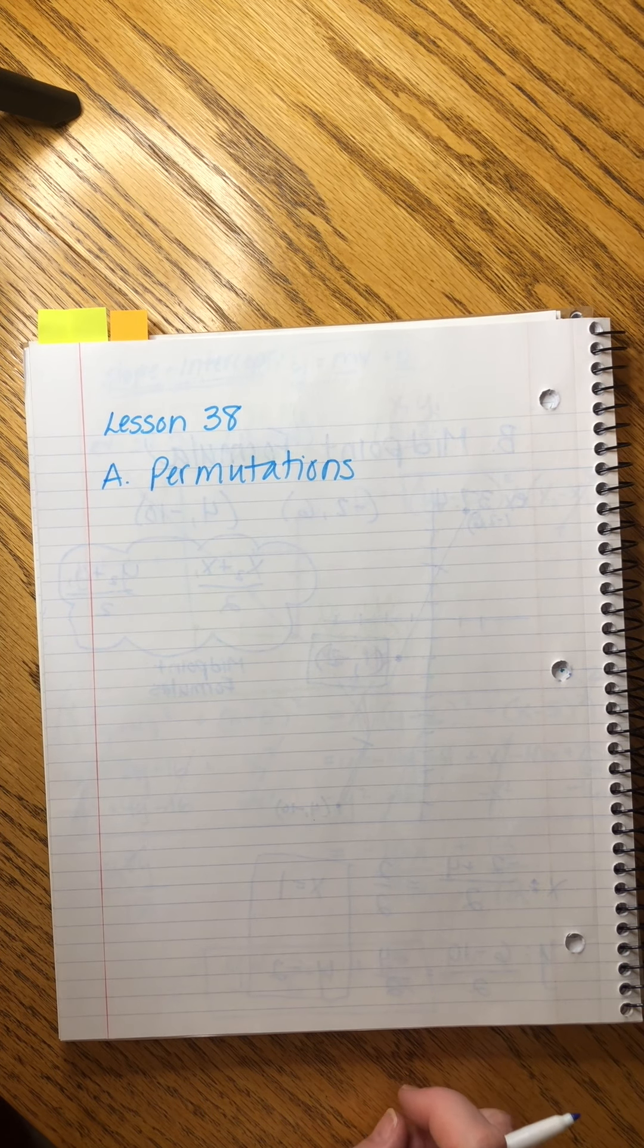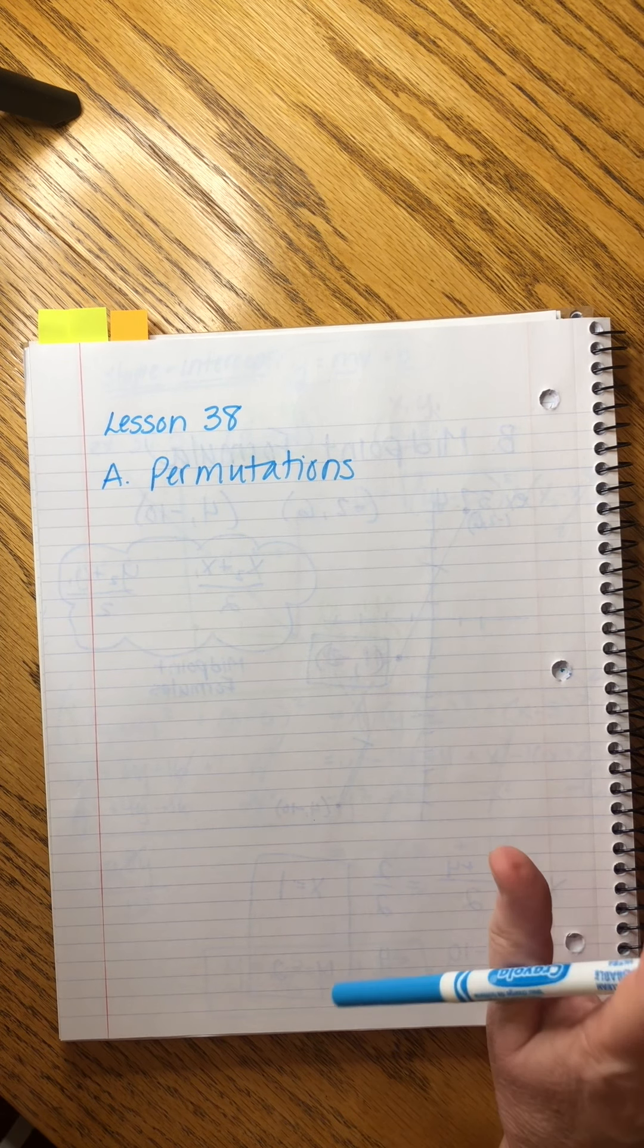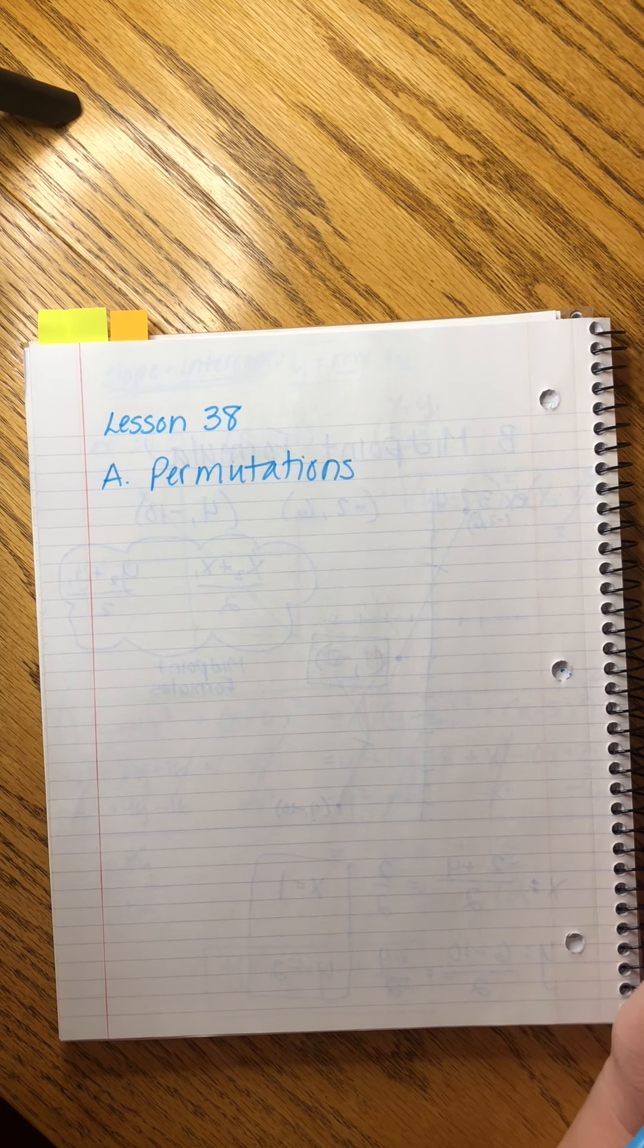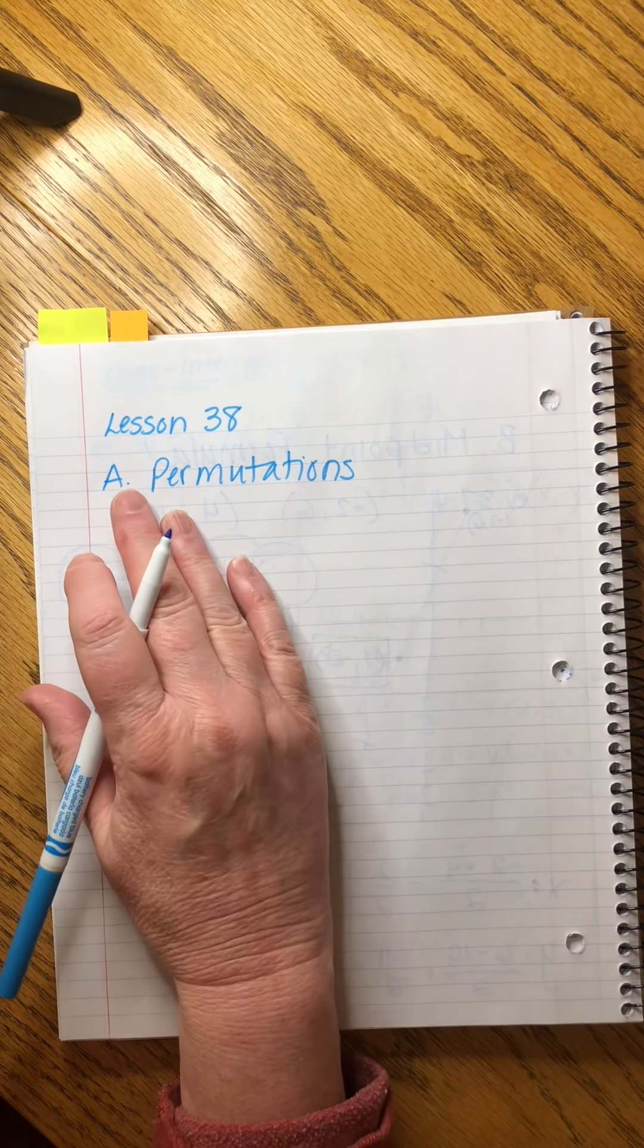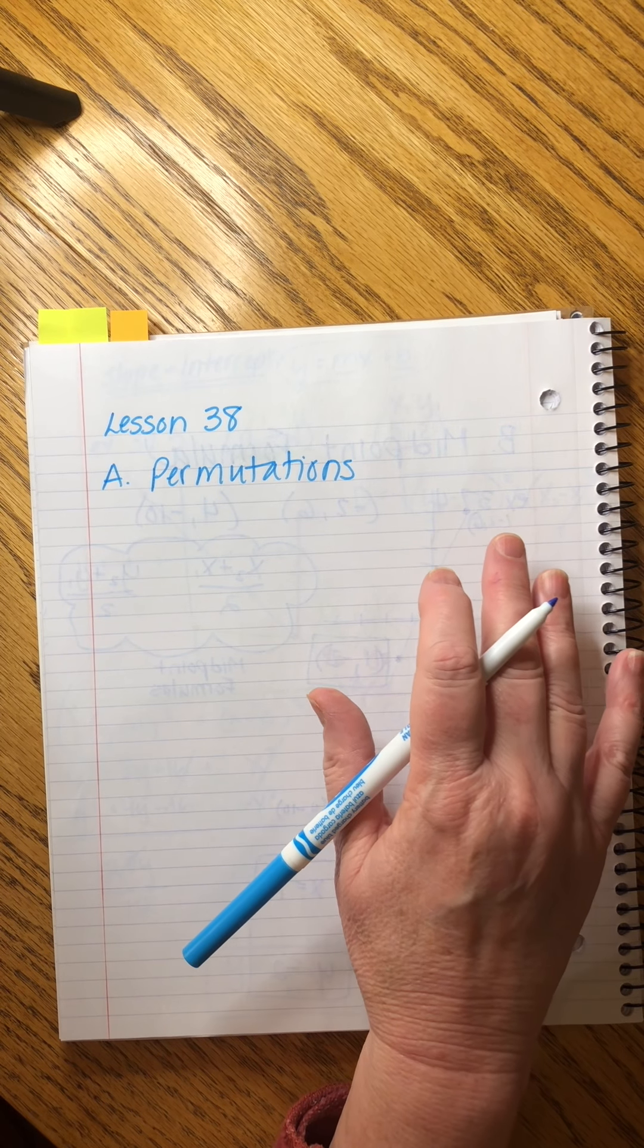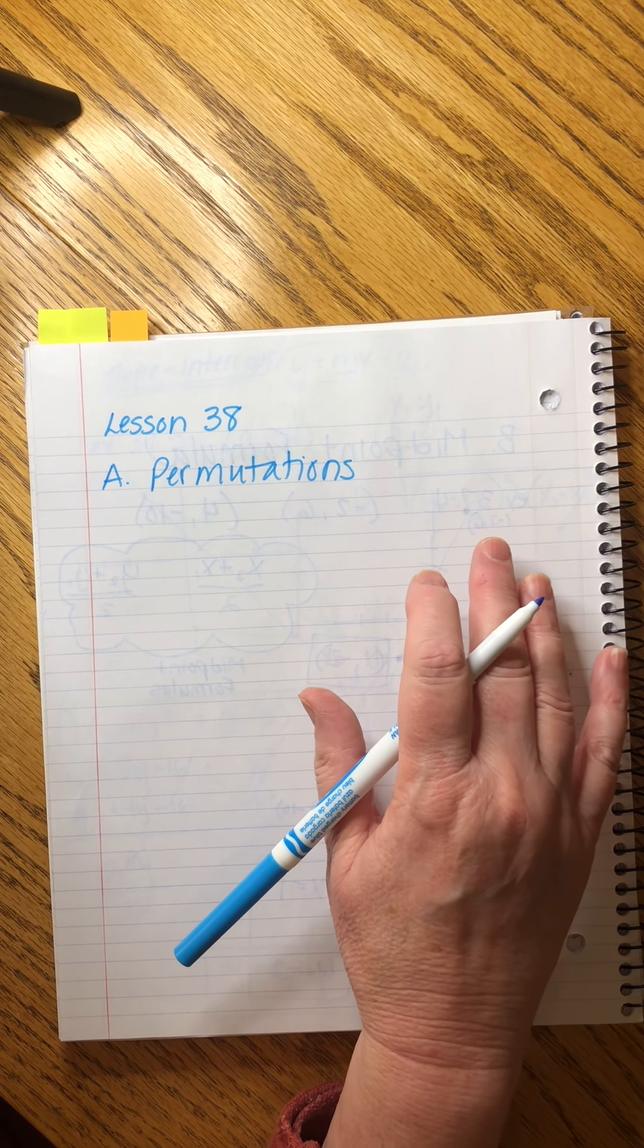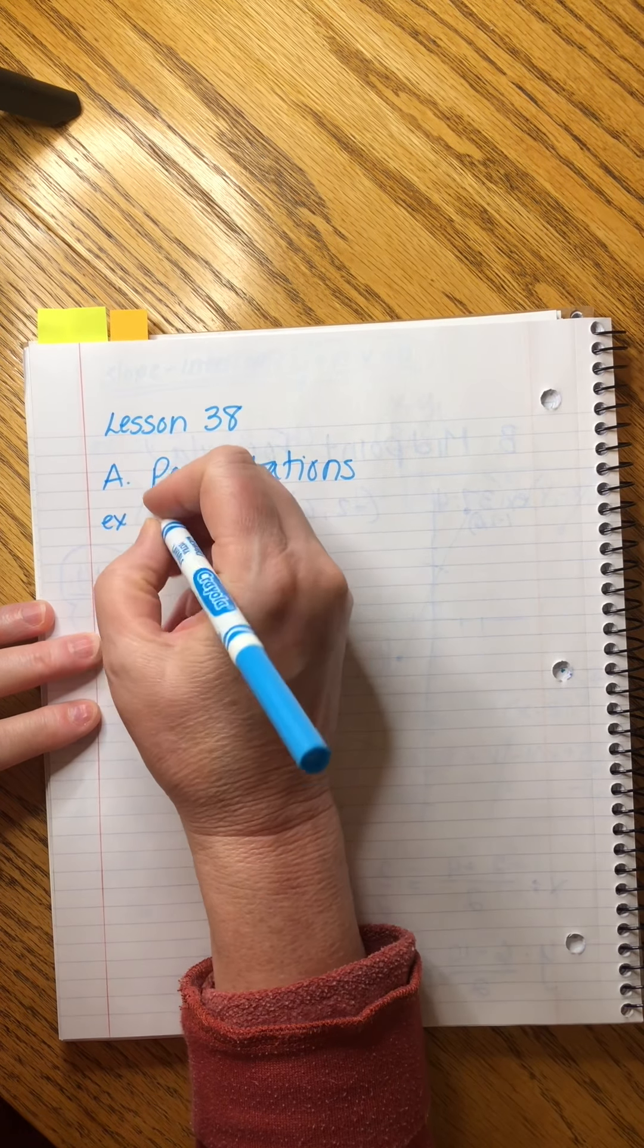Saxon Advanced Mathematics, Lesson 38. We have three different topics this time. You guys buckle in. The first one is a fun one. We're going to talk about permutations and fundamental counting principle. We talked about this last year. Let's dive in and I'll explain as we go.